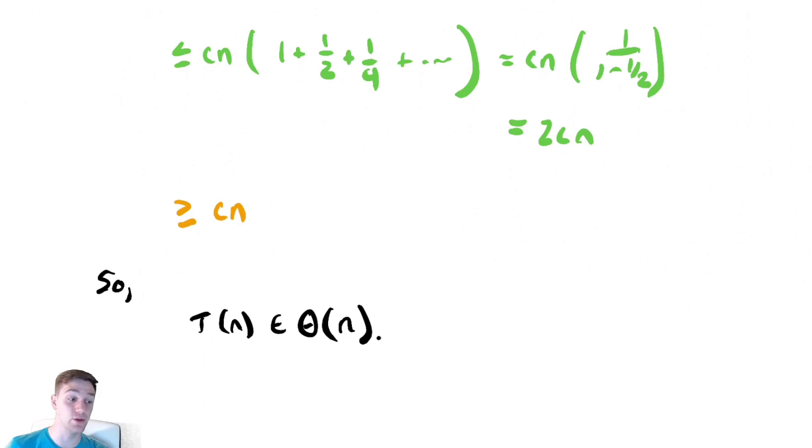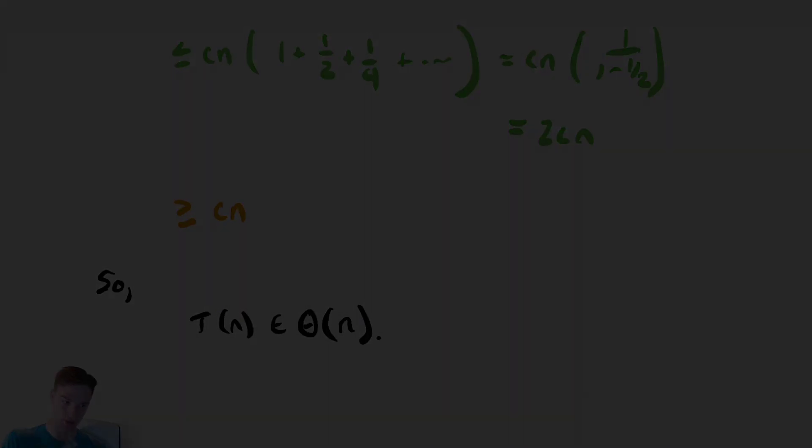This shows that it's possible to get these sort of summations while having a for loop inside of a while loop. It's not necessarily just while loops inside of while loops.